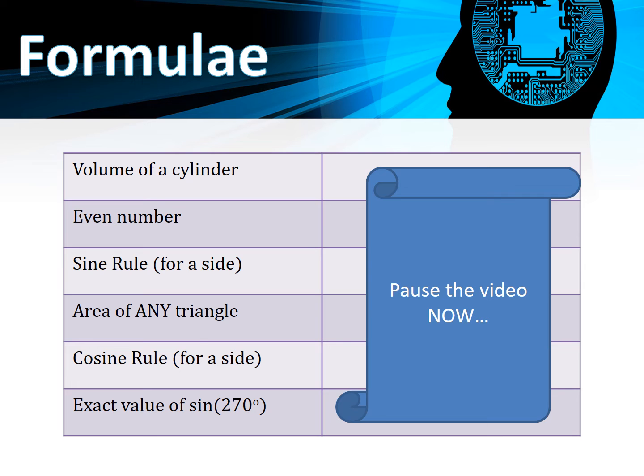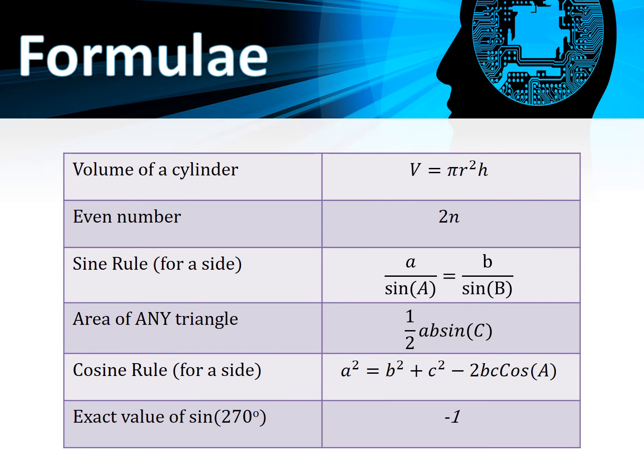Here are your solutions. Volume of a cylinder: V = πr²h. An expression for an even number: even numbers are written when we're doing algebraic proof as 2n. If you double any number you get an even number. Sine rule for a side: a/sin A = b/sin B.